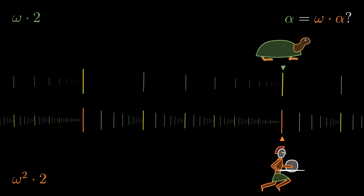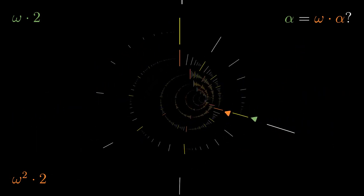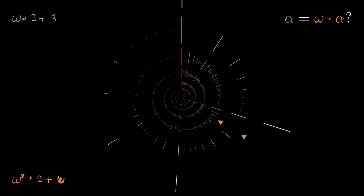Alright, let's answer the question and see the process in the big picture. After the next step, the turtle is at omega times 2 plus 1, whereas Achilles at omega squared times 2 plus omega. After the next omega steps, the turtle is at omega times 3, Achilles at omega squared times 3.